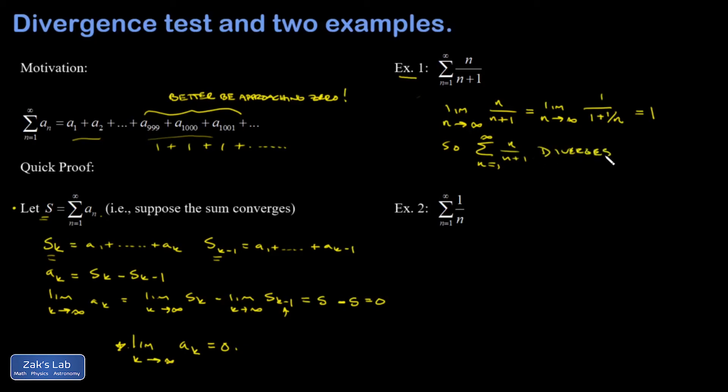That's really all this theorem is good for, and what you want to do is try to really quickly glance at this every time you're presented with a series. Are the terms actually going to zero? If they're not even going to zero as n becomes large, there's no hope of convergence.